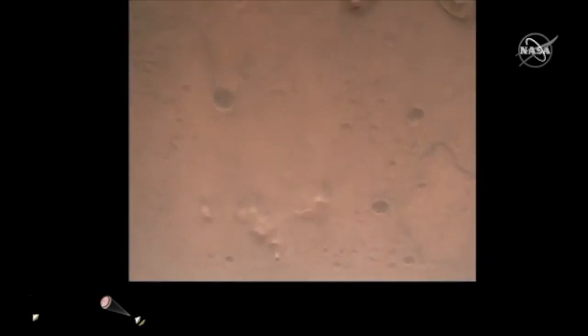Nav filter converge velocity solution 3.3 meters per second, altitude 7.4 kilometers. Now has radar lock on the ground. Current velocity is about 100 meters per second, 6.6 kilometers above the surface of Mars.